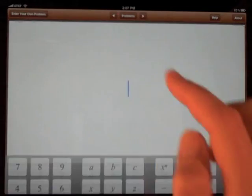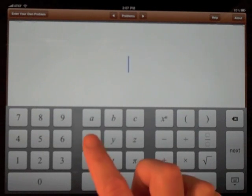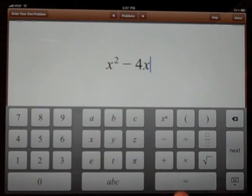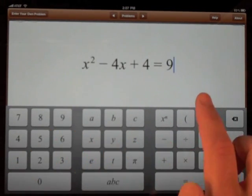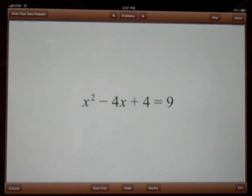Let's try another one. This time I'm going to enter x squared minus 4x plus 4 equals 9. The expression on the left is a perfect square, and I can factor it by squeezing it.